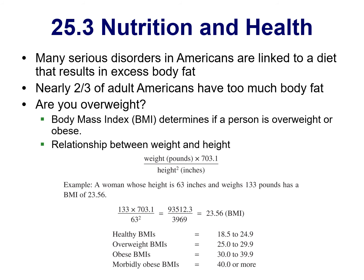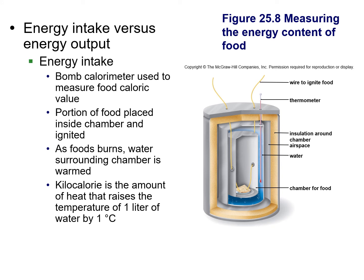Before COVID-19 became the top killer in the US, cardiovascular disease and related conditions were the main killers. Over 50% of Americans fall under overweight or obese categories. To measure energy intake, scientists use a bomb calorimeter — they ignite a food sample inside a chamber and measure the energy produced in kilocalories, similar to thermochemistry, calculating how much heat is needed to raise one liter of water by one degree Celsius.